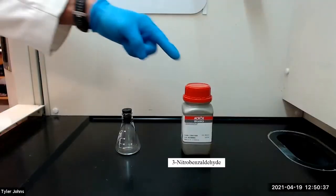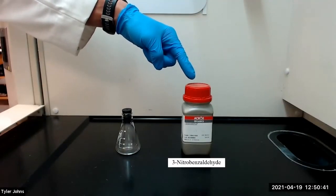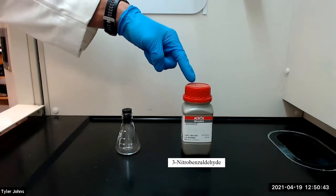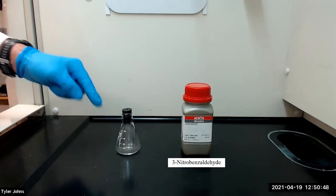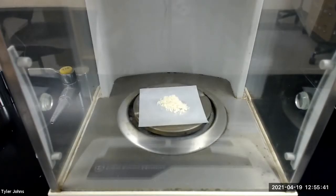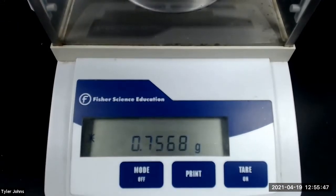We next need to add approximately 0.005 moles of the substituted benzaldehyde, 3-nitro benzaldehyde, to the 4-methyl acetophenone in the pre-weighed flask. The mass of 3-nitro benzaldehyde that we will be using is 0.7568 grams.